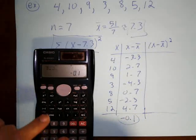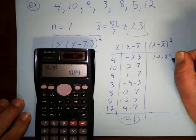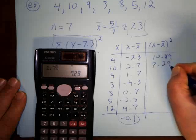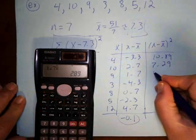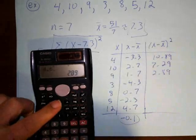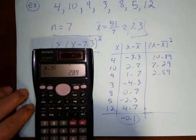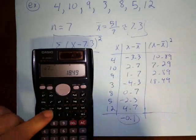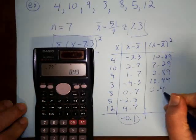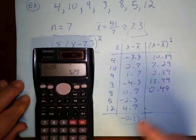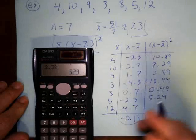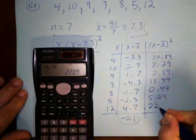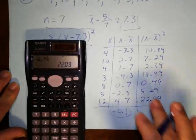And so now I need to square each one of these. So 3.3 squared gives me 10.89, 2.7 squared gives me 7.29, 1.7 squared is 2.89, 4.3 squared is 18.49, 0.7 squared is 0.49, 2.3 squared is 5.29, 4.7 squared is 22.09.